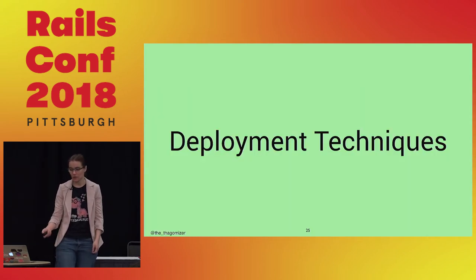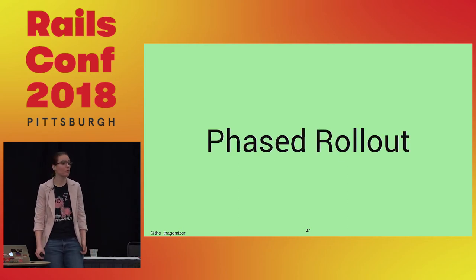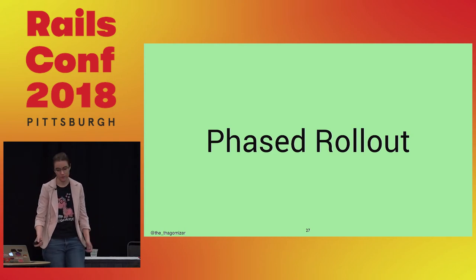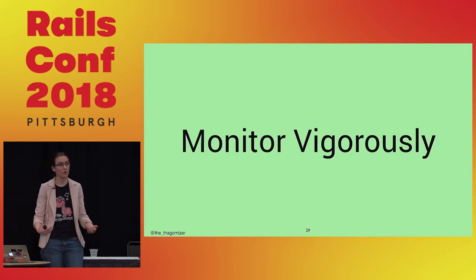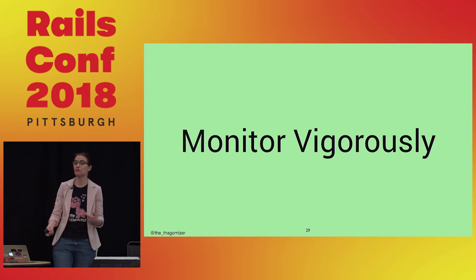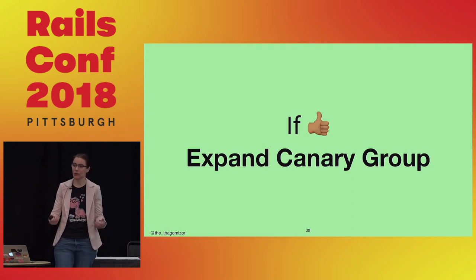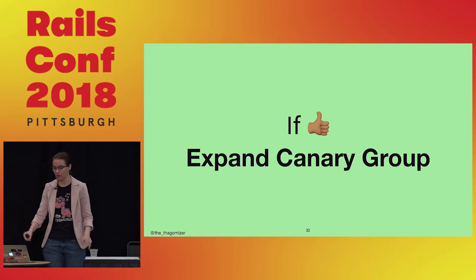Deployment testing. The first technique is canaries. A canary is a phased rollout where you roll out your release gradually to some of your servers over the course of minutes, hours, days, or even weeks. A subset of your users or servers receives the new code. Once rolled out, you monitor vigorously for things like error rate, memory, and disk — but also user-based metrics like free trial conversions or purchase path completion. If everything is thumbs up, you expand the canary group, release a bit more, monitor, and expand until you've rolled out to all servers.